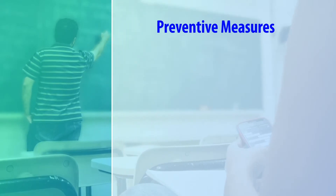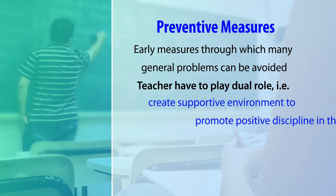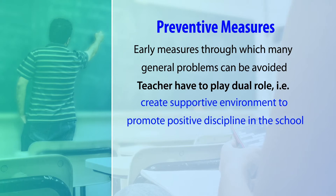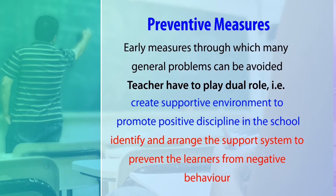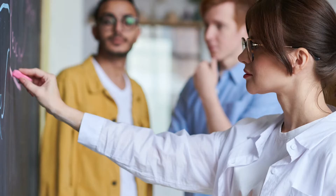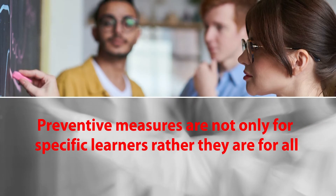What are preventive measures? These are measures adopted by the teacher and school even before a problem occurs — early measures through which many general problems can be avoided. A teacher has to play a dual role: creating a supportive environment to promote positive discipline in the school, and identifying and arranging a support system to prevent learners from negative behaviors.